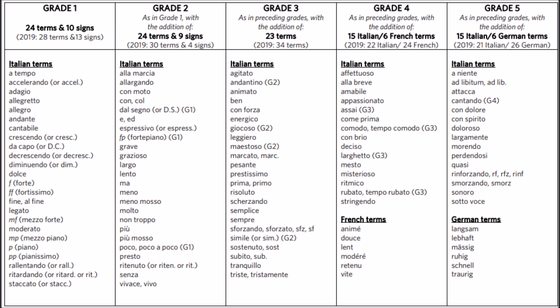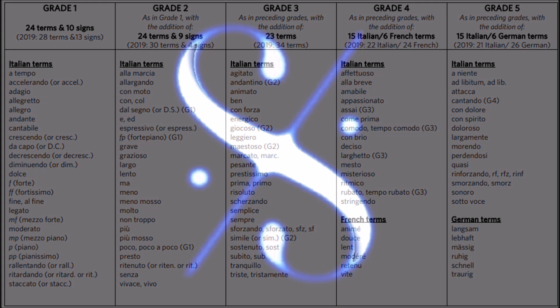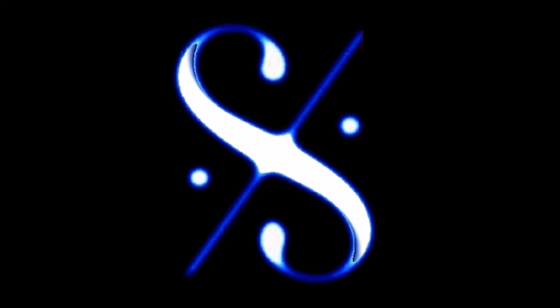You can see on your screen now a table, and if it's a little bit too small to read, there is a link in the description below where you can download this table for future reference. Also, in this link there is the opportunity for you to download some sample papers for each of grades 1–5 relating to the new online theory syllabus.